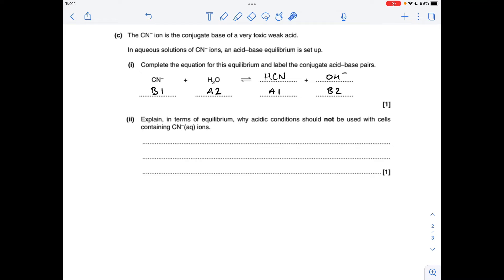So there's a couple of ways you can answer the next part. So you could just simply say that H plus ions from acidic conditions would react with the cyanide ions and form hydrogen cyanide, which is the very toxic weak acid.